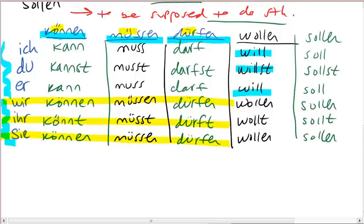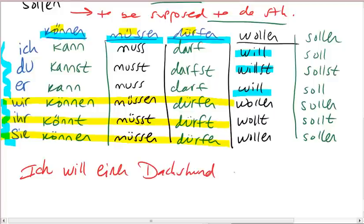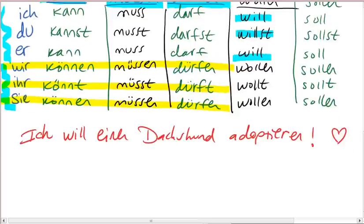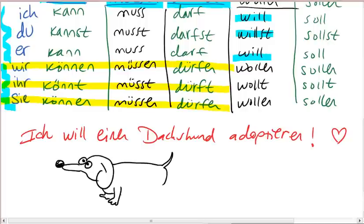So it's time to do some examples. How about the first one with a familiar subject if you've been watching my other videos? Ich will einen Dachshund adoptieren. Ich will einen Dachshund adoptieren, weil sie so süß sind. So keep your eyes on that sentence. Even though I'm drawing a cute doggy here.